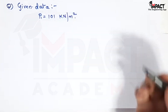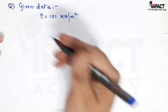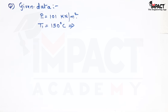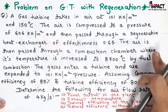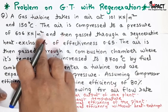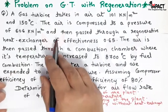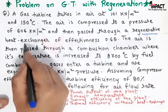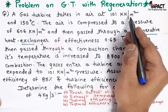Pressure P1 is given as 101 kilo Newton per meter square. Temperature T1 at inlet is 150 degree Celsius, which is 423 Kelvin. The air is compressed to a pressure P2 of 606 kilo Newton per meter square, and then passed through a regenerative heat exchanger.